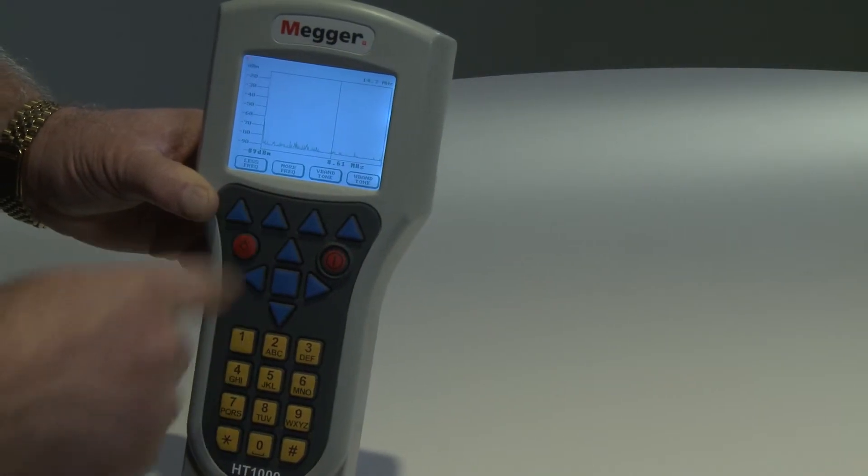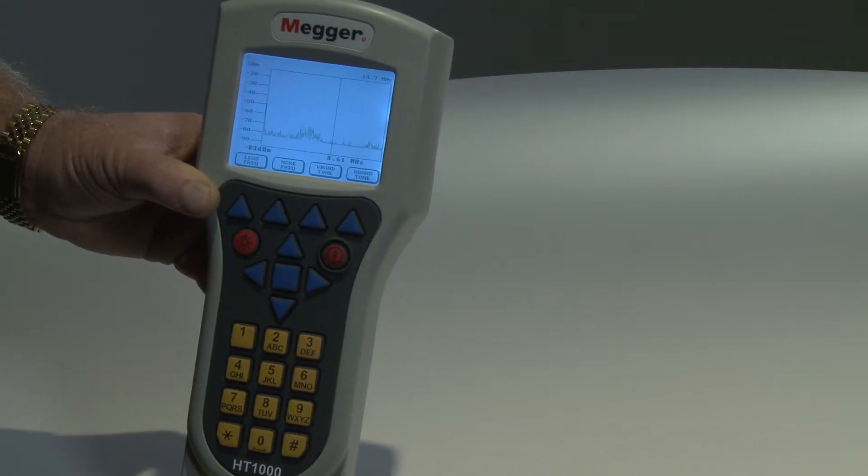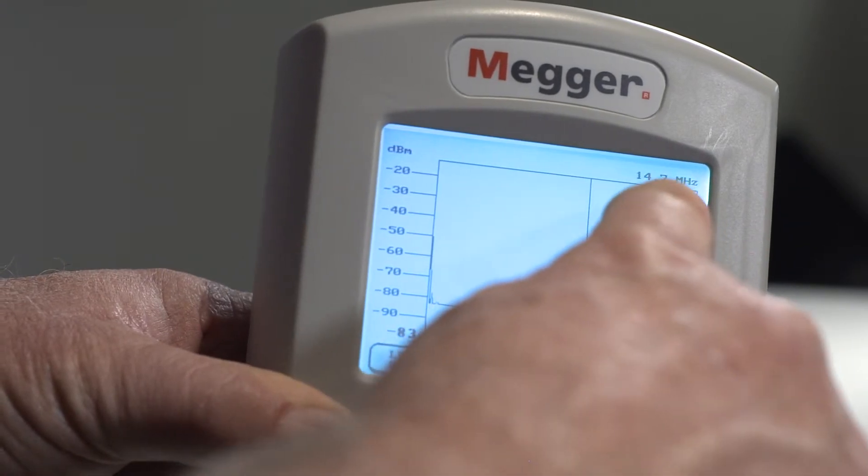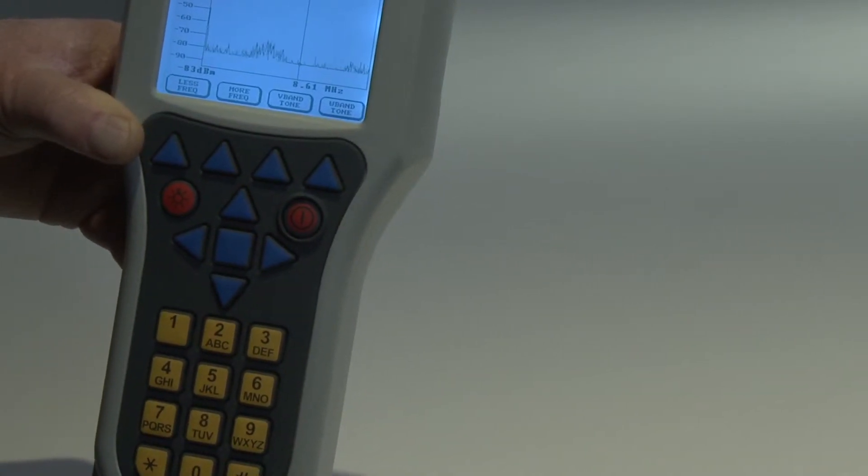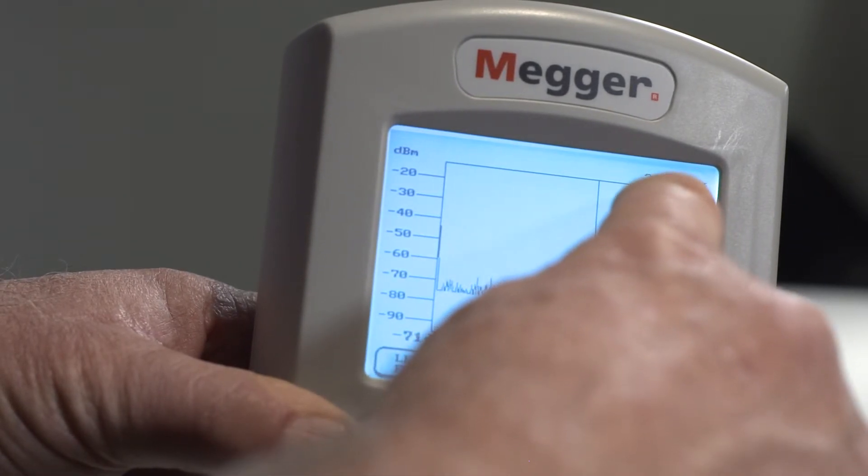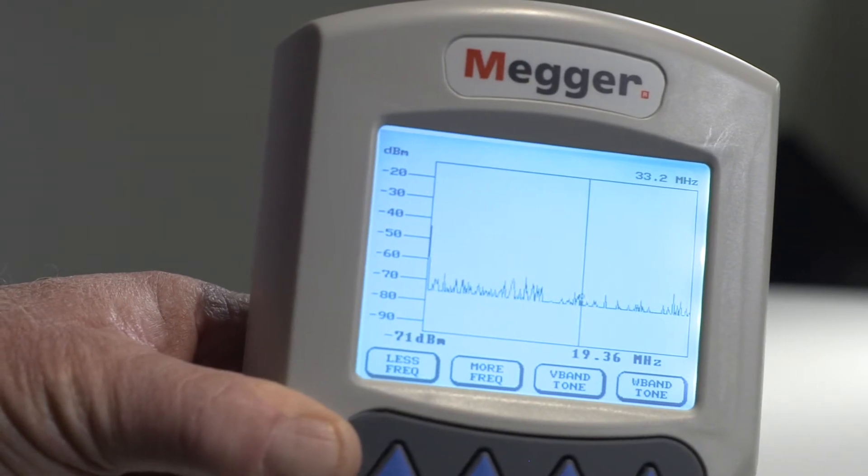Selecting more frequency with the multifunctional soft key located on the keypad below the icon will display a frequency range from 0 to 14.7 MHz. Selecting more frequency again will display a frequency range from 0 to 33.2 MHz.